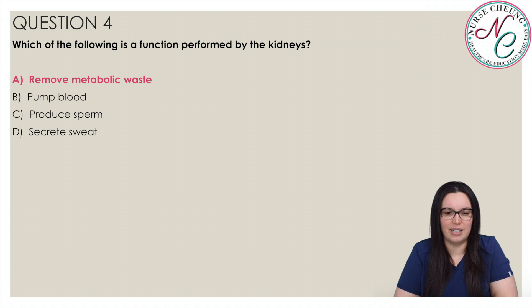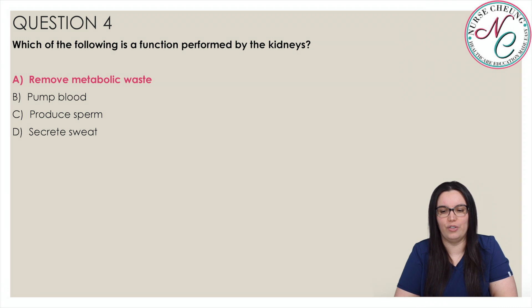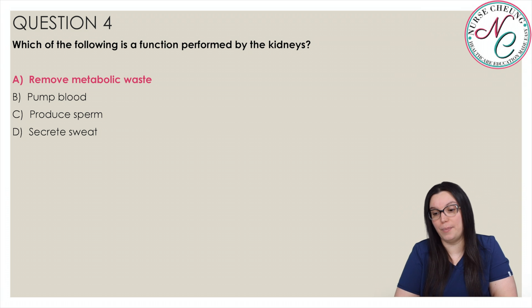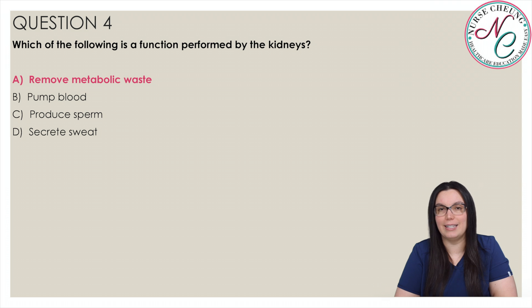One of the functions of the kidneys is to remove metabolic waste, and they also produce urine. The heart pumps blood, the testes produce sperm, and the glands in the skin secrete sweat.